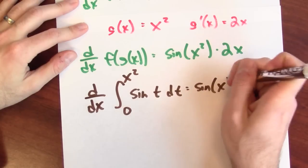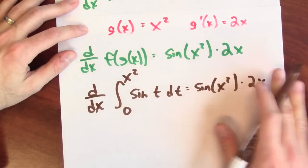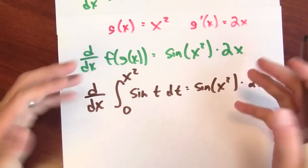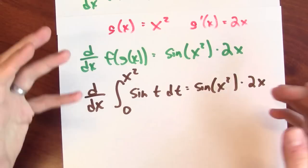This is sine of x squared times 2x. And this statement we can get by combining the chain rule and the fundamental theorem of calculus.